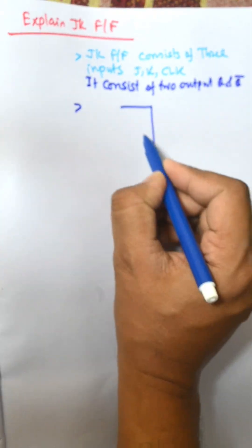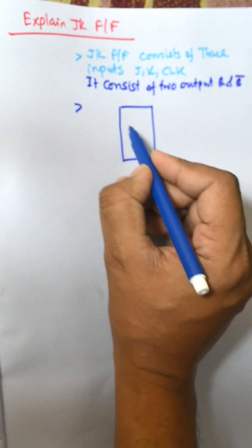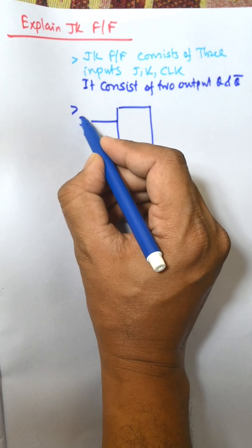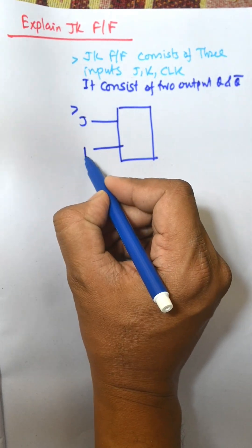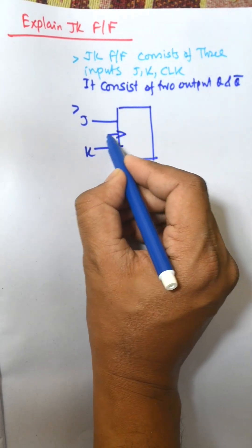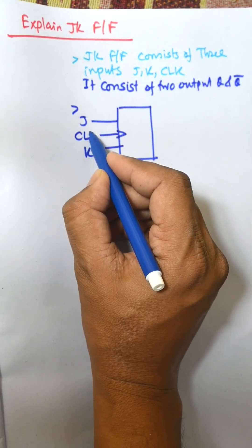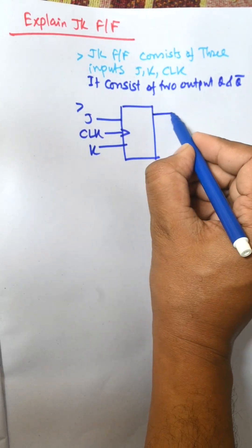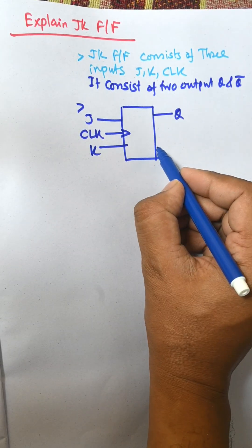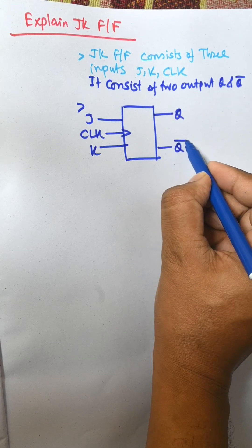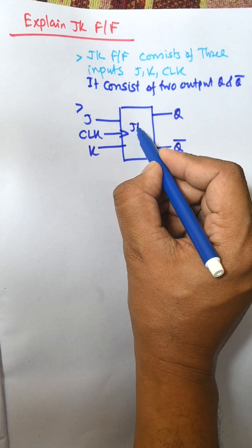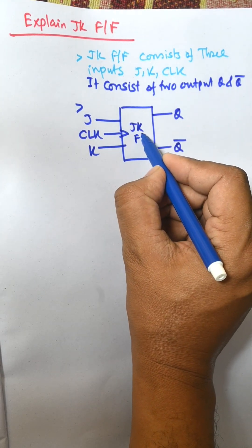Now this is the block diagram. J and K are inputs, this is CLK, and the two outputs are Q and Q-bar. This is the JK flip-flop block diagram.